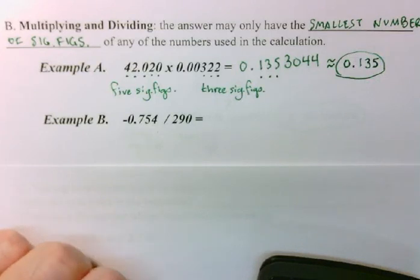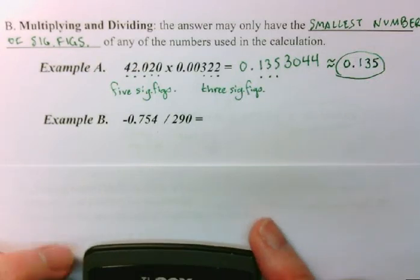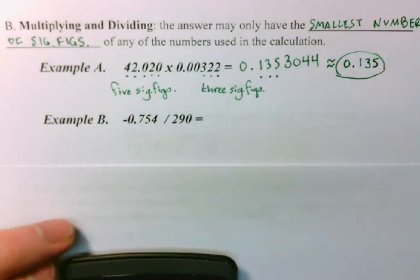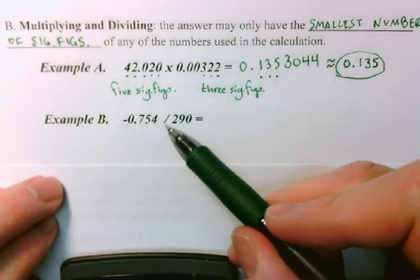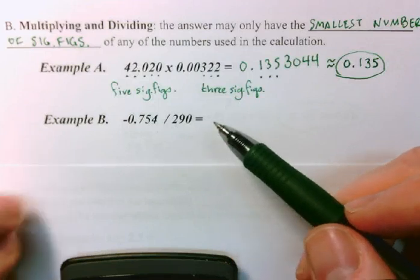Okay? Let's take a look at example B. So, again, this is a multiplication or division. This is a division problem. So, I'm going to be using the rule for division.